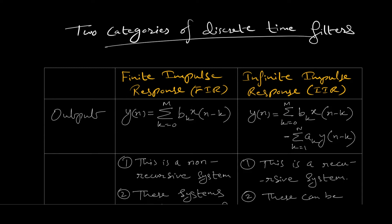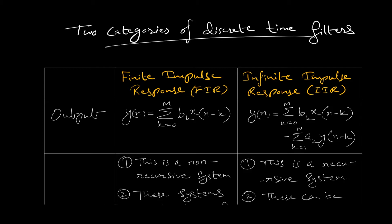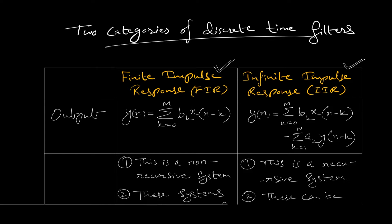From today onwards we will be starting with digital filters. We have already seen the comparison between digital and analog filters in our last class. Now onwards we will be discussing digital filters, especially two types: FIR and IIR. FIR is finite impulse response filter and IIR is infinite impulse response. We will compare these two in today's class.